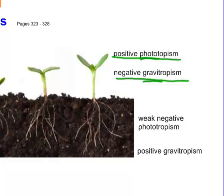Gravity is pulling the plant down, but the shoot grows up against that, so as far as gravity is concerned it's a negative reaction. Down in the roots we have the opposite going on — we have negative phototropism.